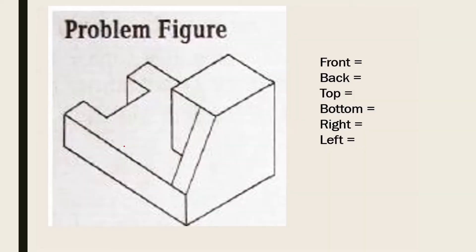How many surfaces does the object contain? We have to count the surfaces on the front, back, top, bottom, right, and left — all six sides. Let's start from the front.